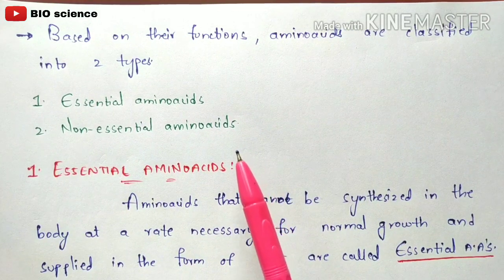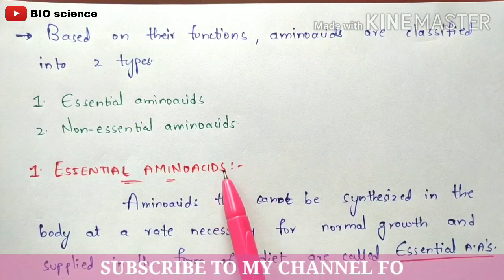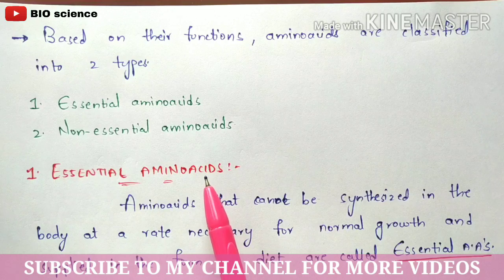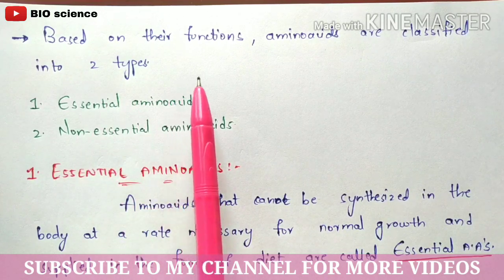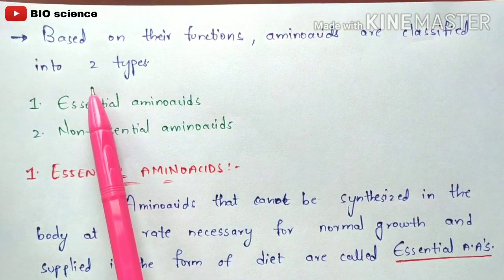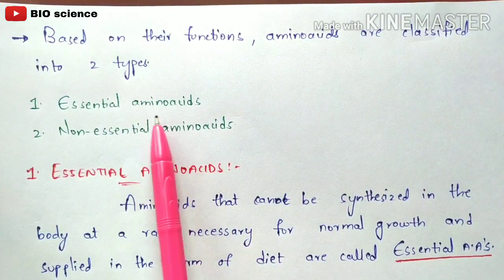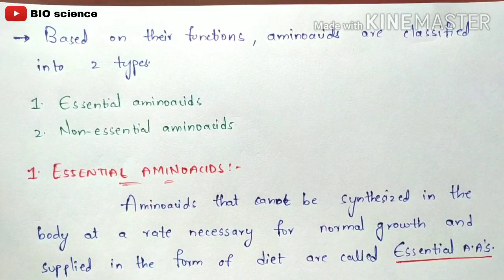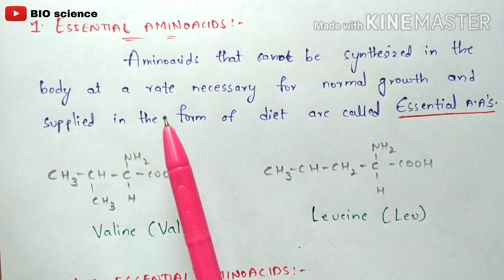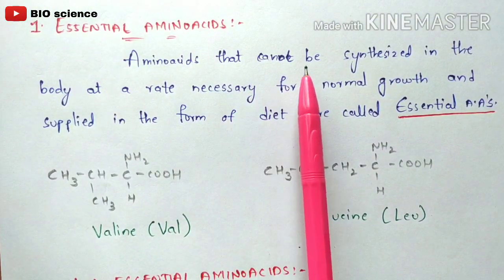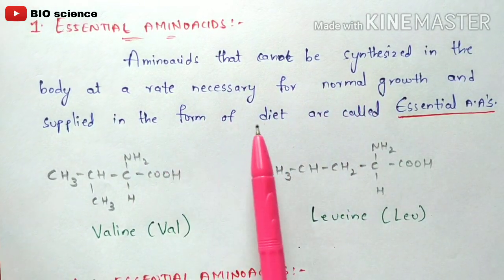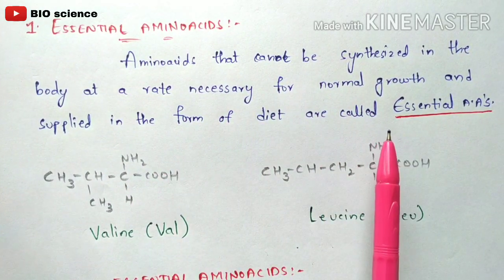So till now we have learned about amino acids classified based on their nature. Now let us see amino acids classified based on their functions. Based on their functions, amino acids are classified into two types: essential amino acids and non-essential amino acids. Essential amino acids are those that cannot be synthesized in the body at a rate necessary for normal growth and must be supplied through diet.